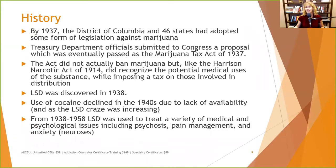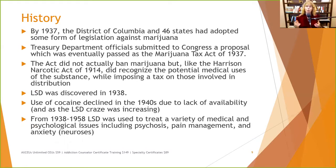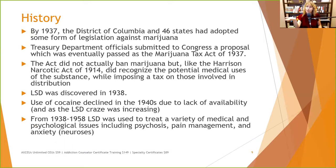By 1913, the District of Columbia and 46 states had adopted some form of legislation against marijuana. It's really unclear why people got so fired up about marijuana when other drugs were still legal or readily available. The Treasury Department submitted to Congress a proposal eventually passed as the Marijuana Tax Act — again, the government saying if you're going to use it, we get paid. The act didn't actually ban marijuana at all, but like the Harrison Act, it recognized the potential medical uses of the substance.